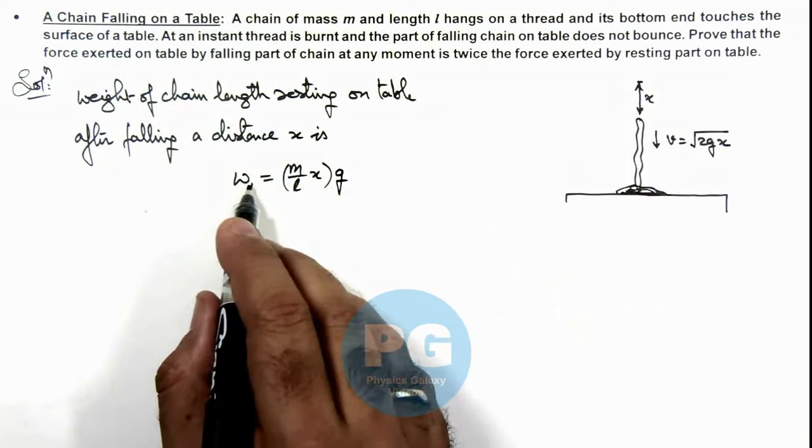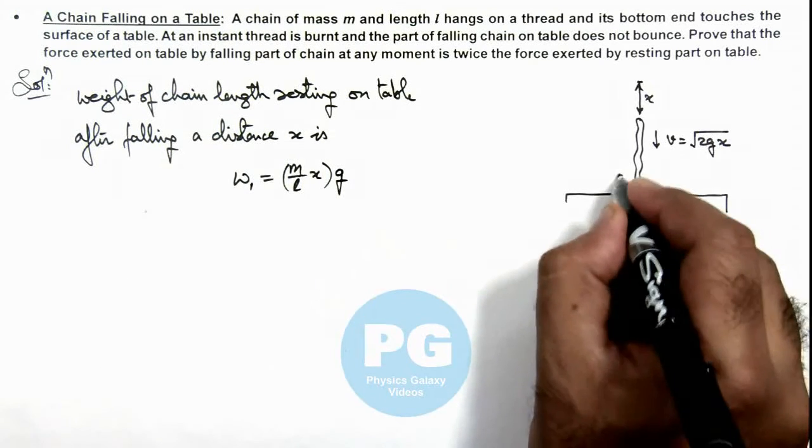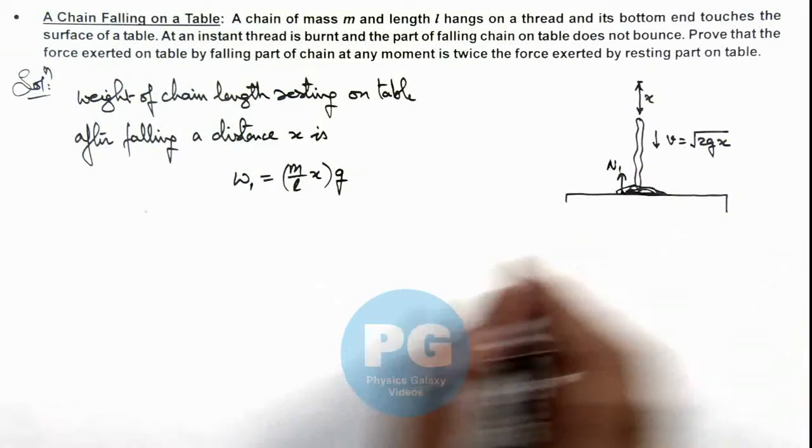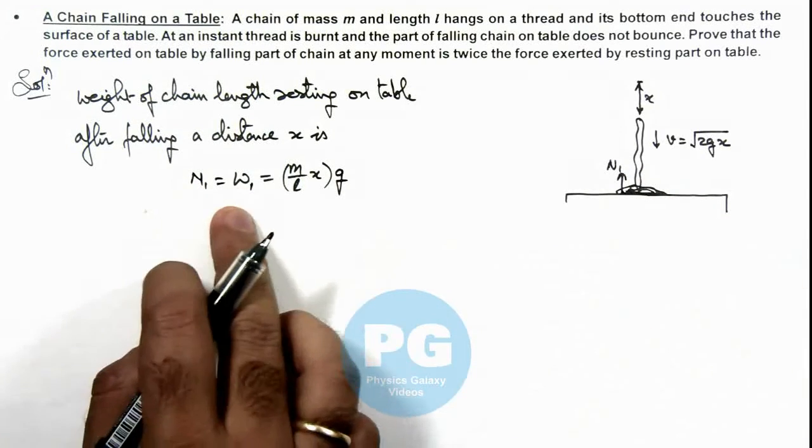So this is the weight which will develop a normal reaction n1 on the table. The value of n1 is equal to this w1.